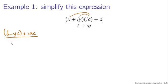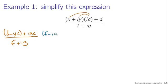That's then going to be divided by f plus ig. Now in order to simplify this, you have a complex number in the denominator — you know you need to multiply by the complex conjugate and divide by the complex conjugate: f minus ig divided by f minus ig.